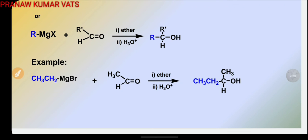Here is an example: CH3CH2MgBr, that is ethyl magnesium bromide, on treatment with CH3COH, that is acetaldehyde, in the presence of ether and then hydrolysis gives CH3CH2CHOHCH3. IUPAC name of this compound will be 2-butanol.